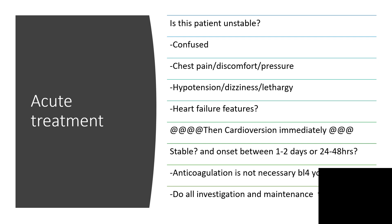Once we're able to determine that, the next step is to cardiovert immediately if the patient is unstable. But if this patient is stable and the onset is between 24 to 48 hours, anticoagulation is not necessary before you cardiovert. Do all your investigations and give maintenance therapy.